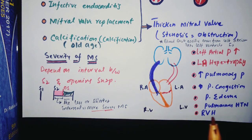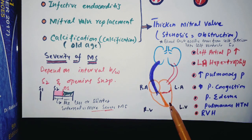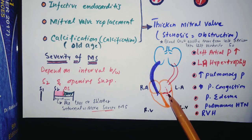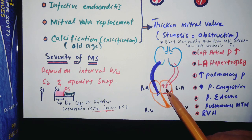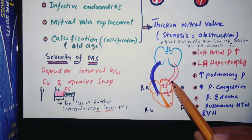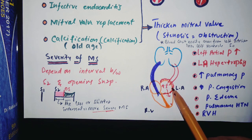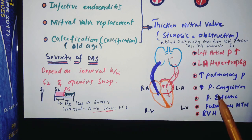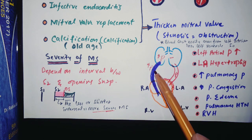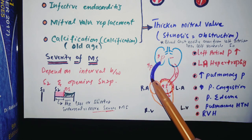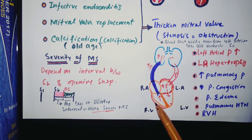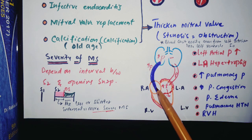Now let's talk about the other abnormalities that occur in mitral stenosis. This is the left atrium and left ventricle. When there is stenosis, it is very difficult for blood to move from the left atrium into the left ventricle, so pressure in the left atrium increases, leading to left atrial hypertrophy. Because of this increased pressure, pulmonary pressure also increases, leading to pulmonary congestion, pulmonary edema, and pulmonary hypertension. As pressure increases in the pulmonary circulation, the right ventricle also hypertrophies because it has to push blood against this high resistance.